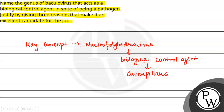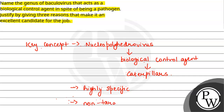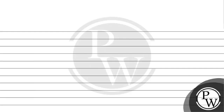Caterpillars are called lepidopteran pests. NPV is effective because it is highly specific — it will only infect caterpillars and damage them. Therefore, it is very specific and effective, and it is safe for non-target organisms. Now let's look at the three reasons we use it as a biological agent. The first main reason is host specificity.